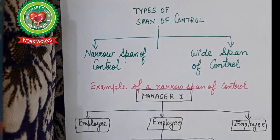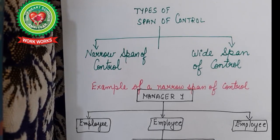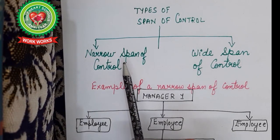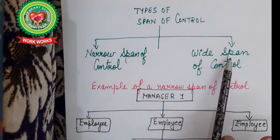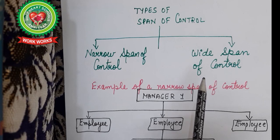There are two types of span of control: narrow span of control and wide span of control. Narrow span of control is also called long span of control, and wide span of control is also called flat span of control.